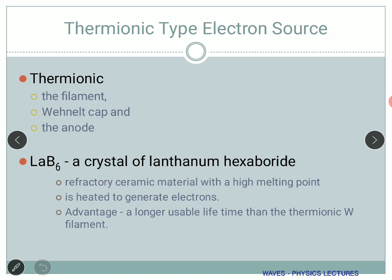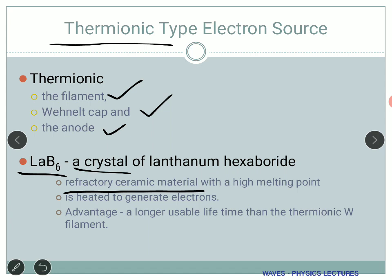There are two types of electron source: one generated using temperature, called the thermionic type. Any electron source has three main parts: the filament, the Wehnelt cap, and the anode. Lanthanum hexaboride is a thermionic type electron source — it is a refractory ceramic material with a very high melting point, so even at very high temperatures it survives. It is heated to generate electrons, and its advantage is a much longer usable lifetime compared to the tungsten filament.